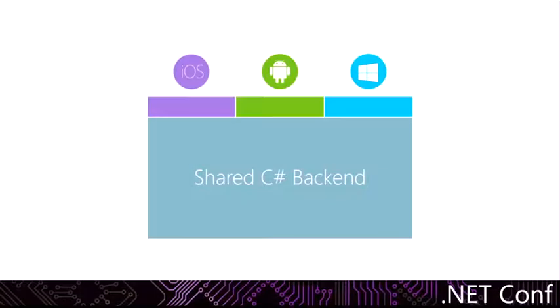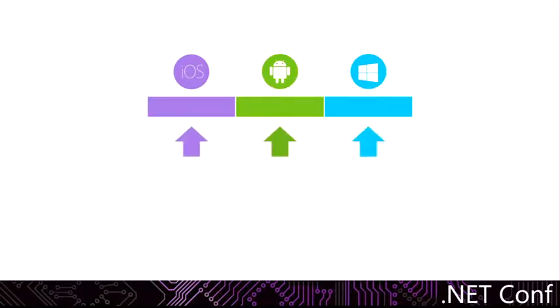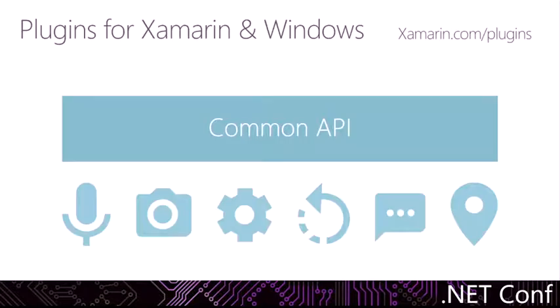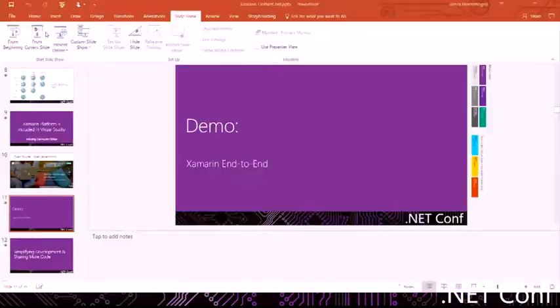What about accessing platform-specific APIs and customizations in the user interface? What we did to simplify that — so you don't have to learn the API three or four different times — is we created Plugins for Xamarin and Windows, which offer a common API to access native features on each platform. For instance, accessing things like the microphone, camera, settings, GPS, and connectivity is a single API that you can access by just pulling in a single NuGet package across all the different platforms.